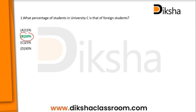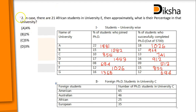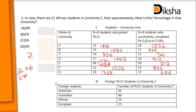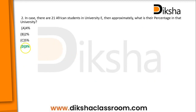Question two: if there are 21 African students in university E, what is the percentage? We found that university E has a total of 684 students. So: (21 / 684) × 100 = 3 percentage. The answer is 3 percentage — 21 is 3 percentage of 684.